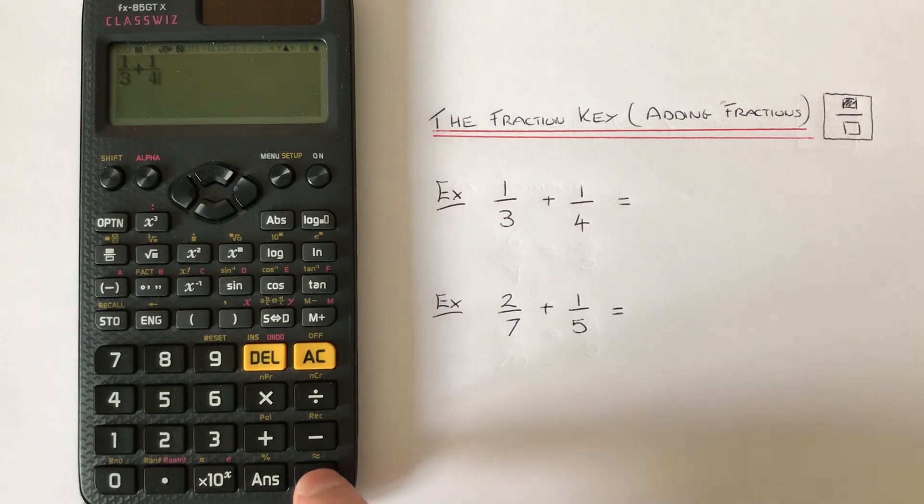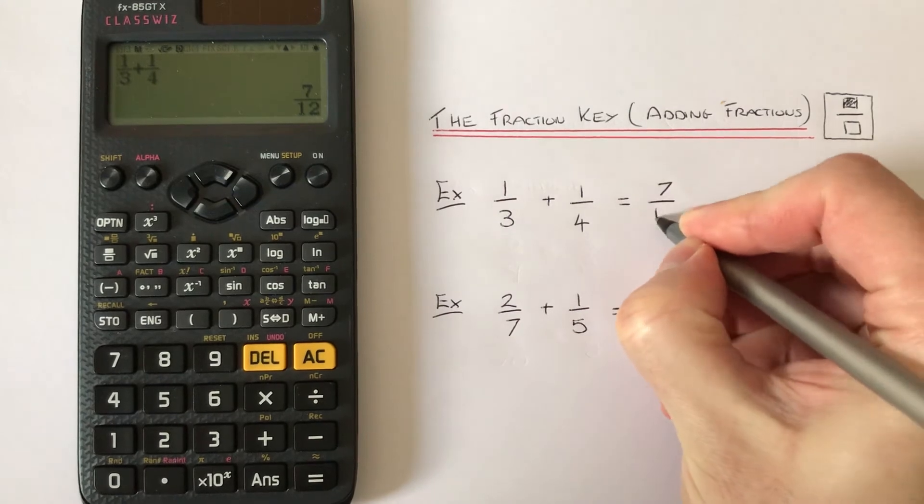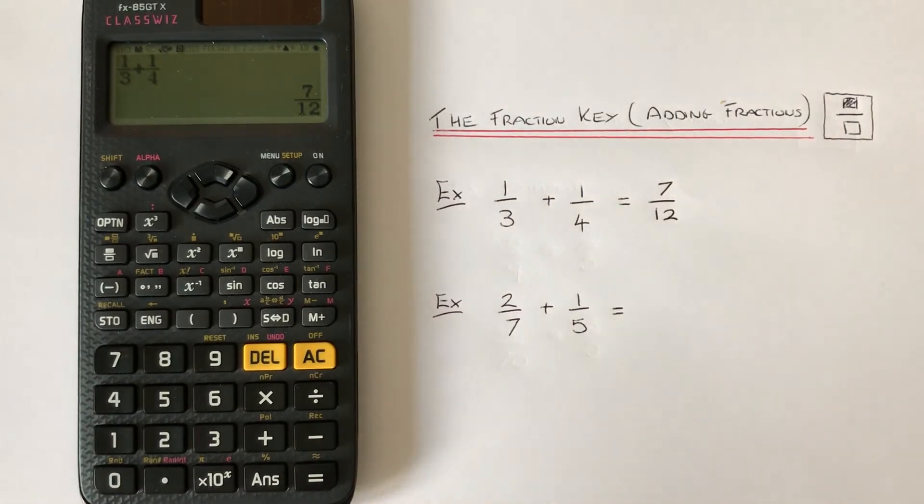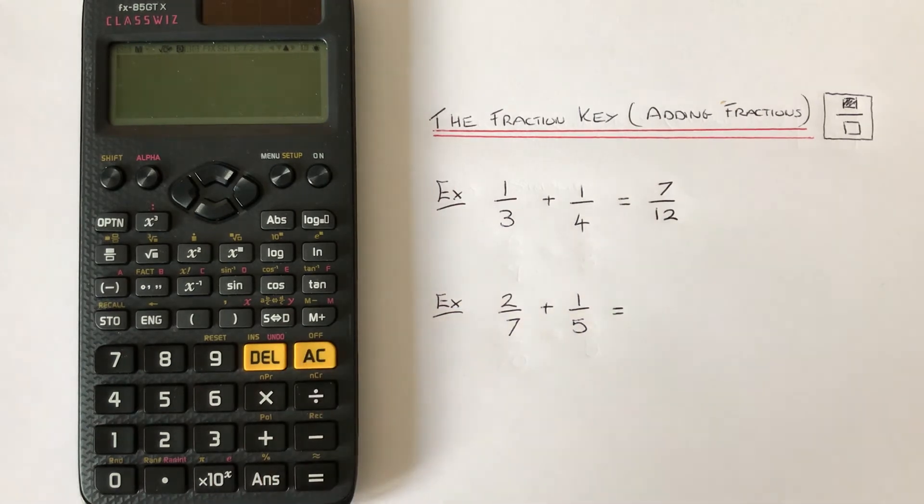Then press the equals and we get the answer seven twelfths. Let's look at the second example. Press AC to delete the last question.